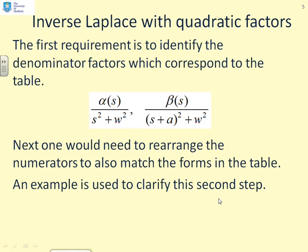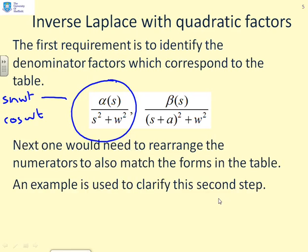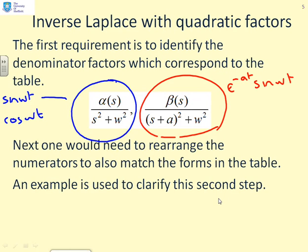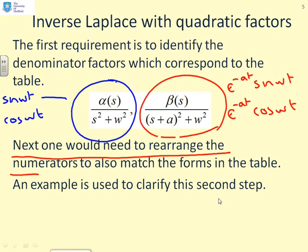Step three is by inspection from the table once you've got the partial fractions in the appropriate form. So what do we do with these quadratic factors? The first thing is to identify the key structure. We've got forms α(s) over s²+ω², and these correspond to terms sin(ωt) and cos(ωt). So if you see a denominator of the form s²+ω², it tells you you've got a sine and cosine component in your solution. Alternatively, if you see a denominator of the form (s+a)²+ω², you've got signals of the form e^(−at)sin(ωt) or e^(−at)cos(ωt). How much sine or cosine depends on β(s). We need to rearrange the numerators so they also match the forms in the table.